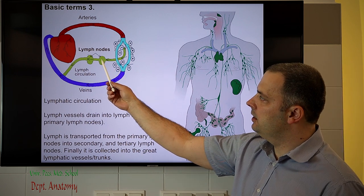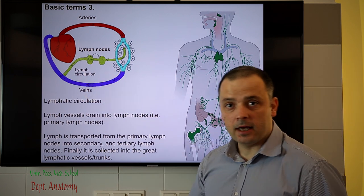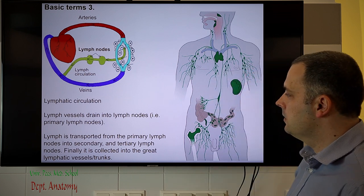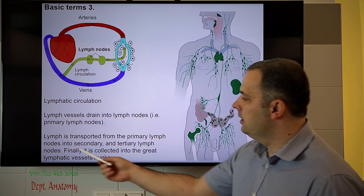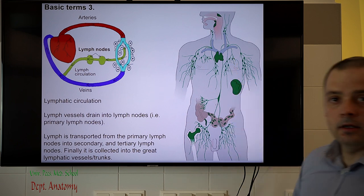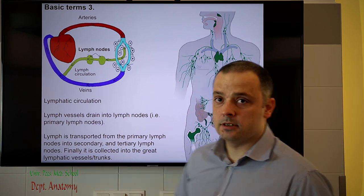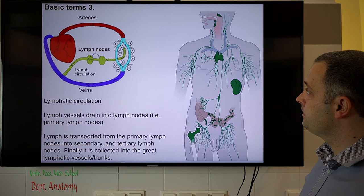After filtration in the primary lymph nodes, the lymph fluid is then transported to secondary and tertiary lymph nodes, and finally it is transported to the great lymphatic vessels.